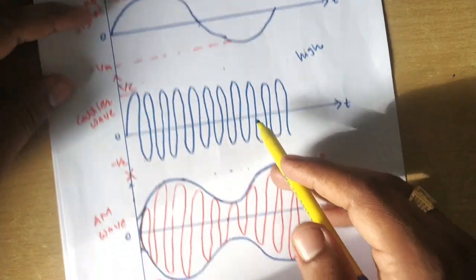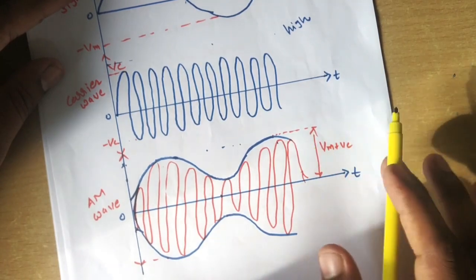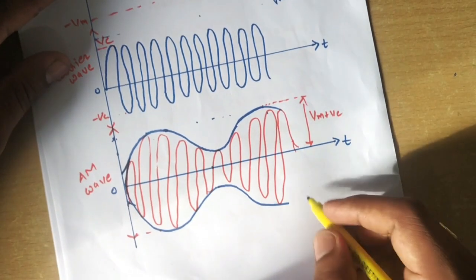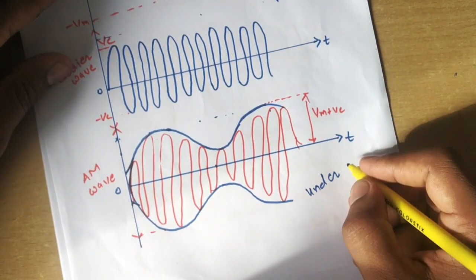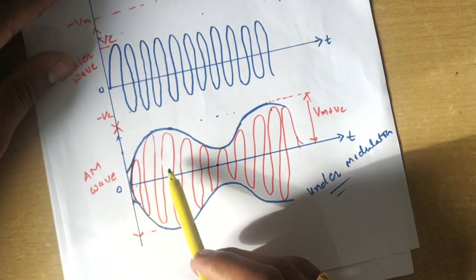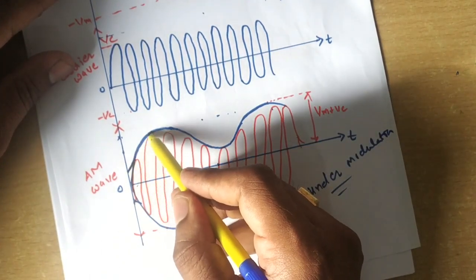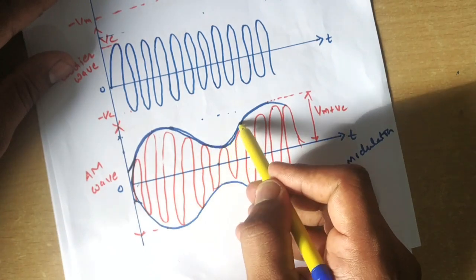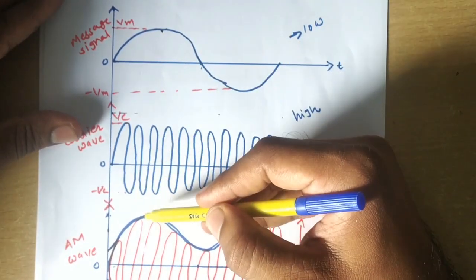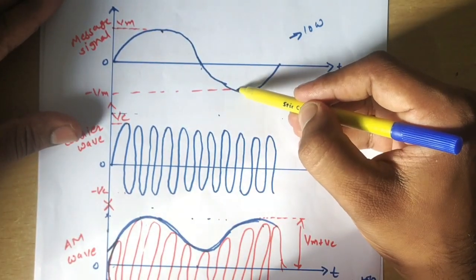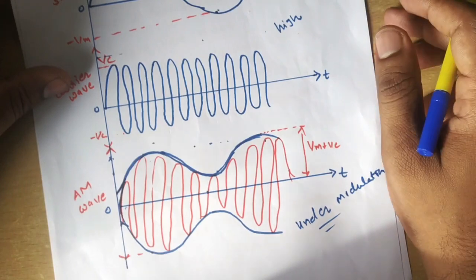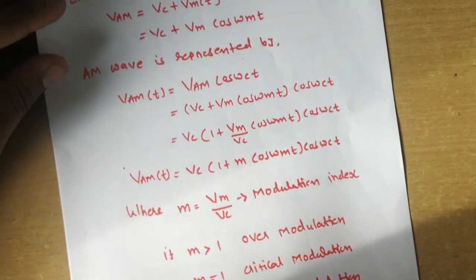When the signal is being modulated, this is how the AM wave looks. I have drawn this for under modulation — we will see different cases. Inside the AM wave we have the high frequency carrier, but the amplitude envelope matches the message wave. When you have a peak in the message signal, you have a peak in the AM wave, and when you have the lowest point, you have the lowest point correspondingly.